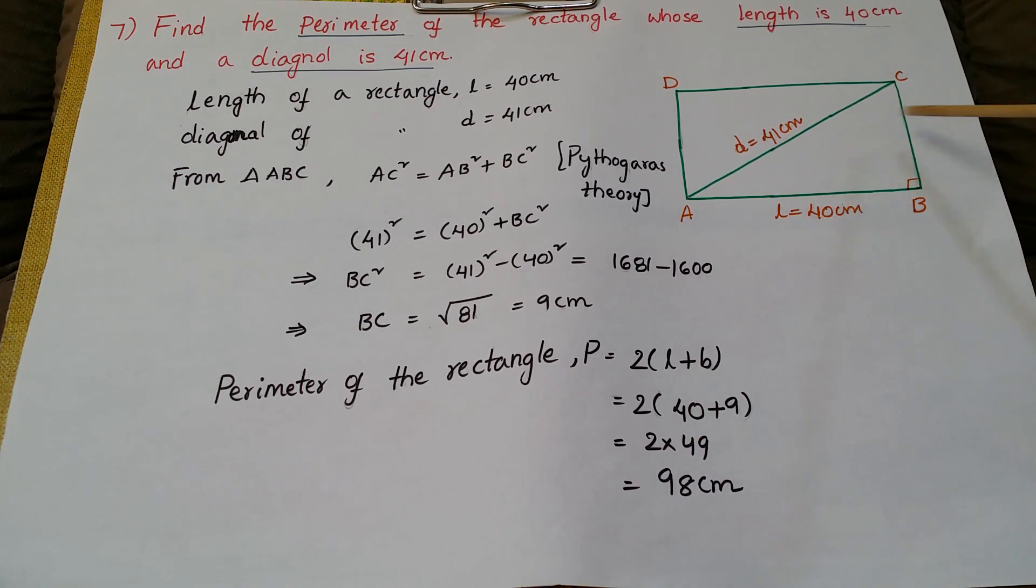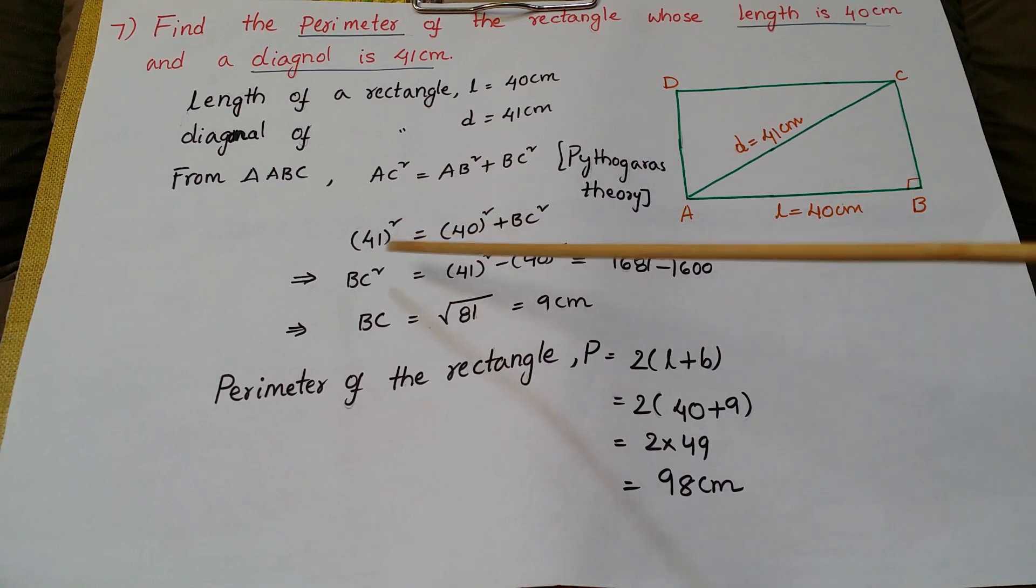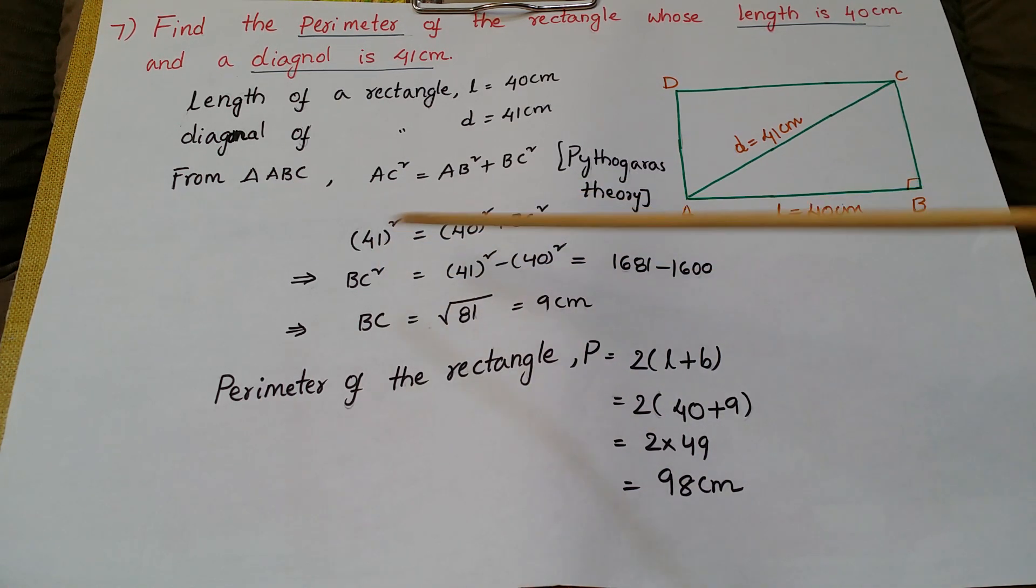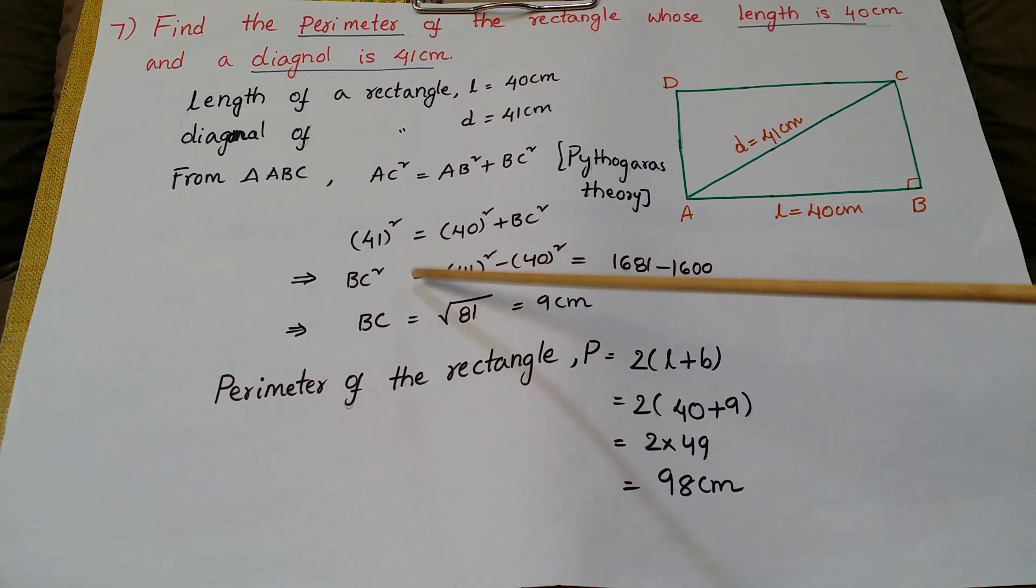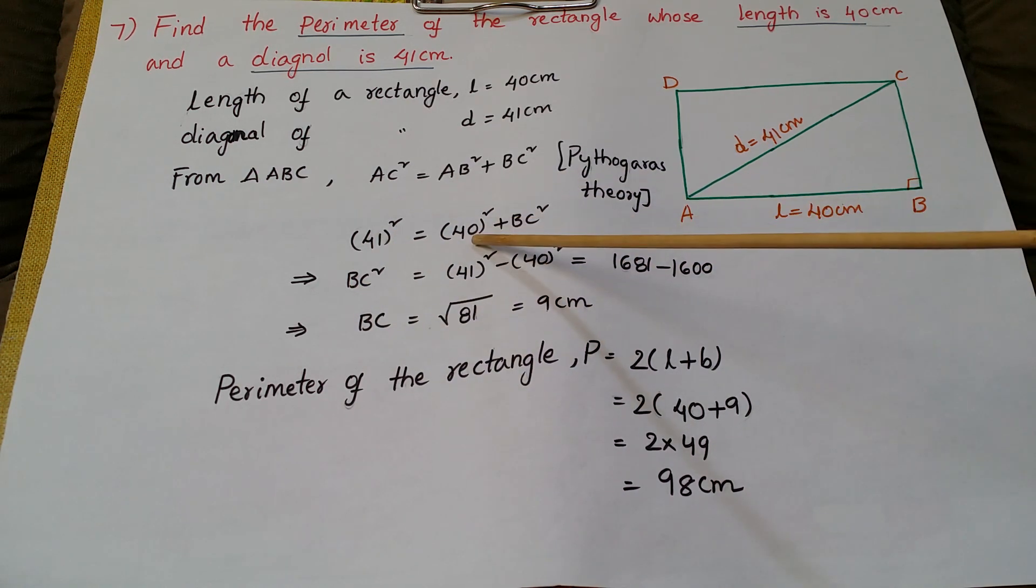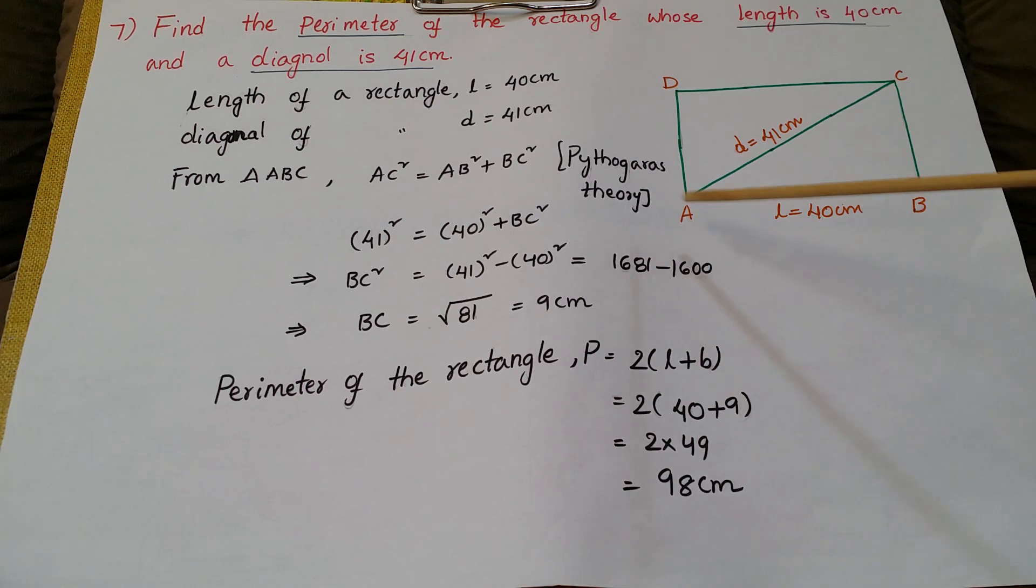So AC is 41 whole square is equal to 40 whole square plus BC square. Now we can calculate: BC square is equal to 41 whole square minus 40 square, so this is 1681 minus 1600, that is 81. So BC is equal to square root of 81, that is 9 centimeters.